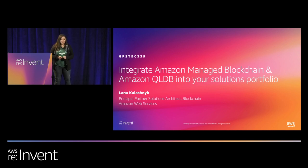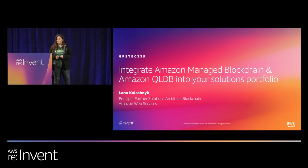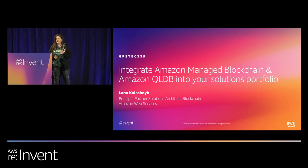My name is Lana Kalashnik. I'm a Principal Blockchain Architect and I work with AWS partners — both consulting and technology partners. My job is to build out the community of partners that are equally skilled in vertical applications as they are with the technology itself — whether that's blockchain, ledger technologies, or implementation thereof.